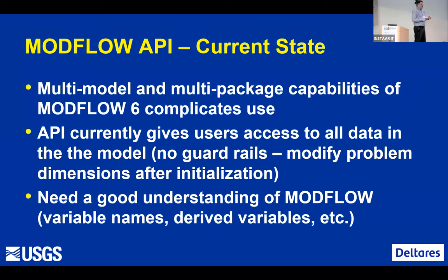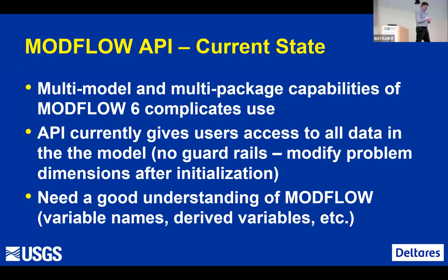We started by trying to restrict what people could use, but inevitably someone would contact us saying 'could you expose this variable?' So what we did is basically expose everything, which means there are no guardrails — somebody could modify anything within the code, including internal variables. When coupling two models, you have to have a good understanding of those models. In our case, variable names are still a work in progress — we're still working on standard names — and there are also derived variables: something that may be an input variable but the model only calculates it internally during the initialization phase. So there are some complications along those lines.